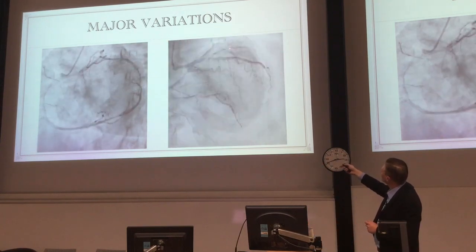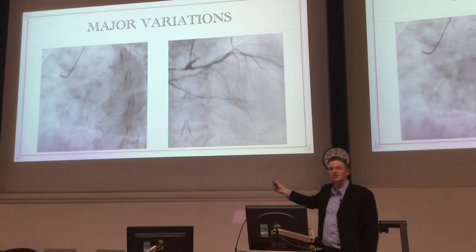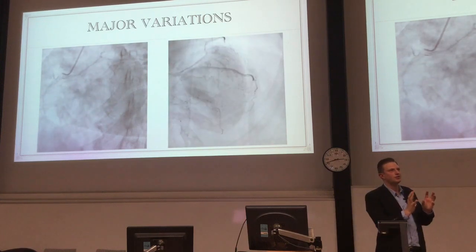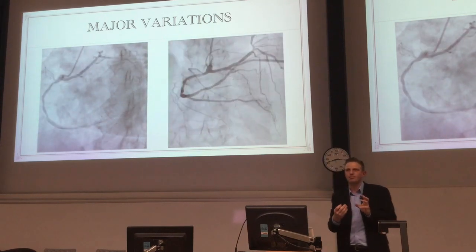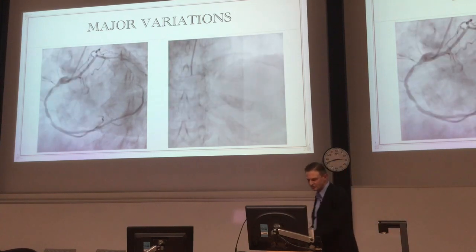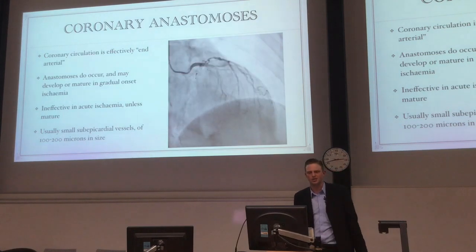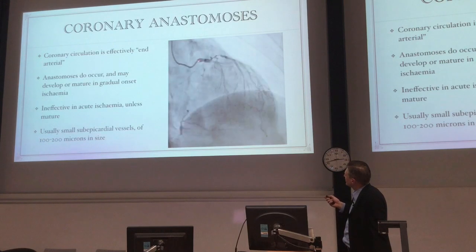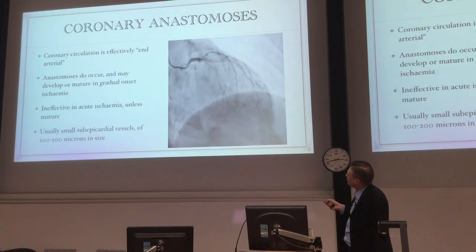Coronaries are pretty much end arteries, and while anastomoses do occur, they're largely useless in acute ischemia. They're usually subendocardial vessels of 100 to 200 microns, and often through septals. They're only really important in someone who has chronic coronary artery disease.